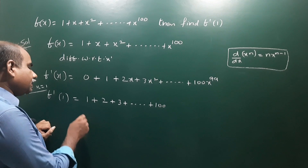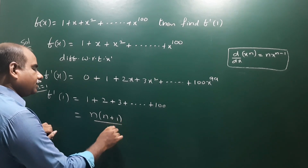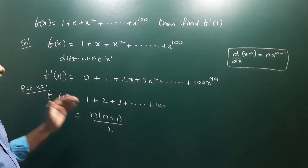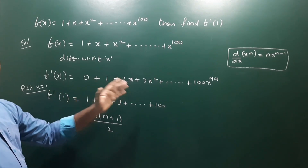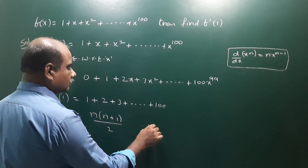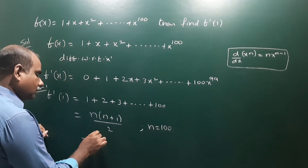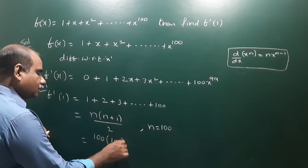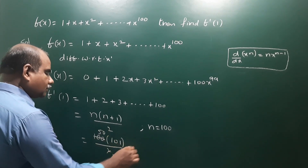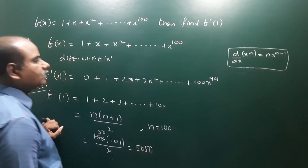The sum of the first n natural numbers formula is n(n+1)/2. These are the first 400 natural numbers, so n = 400. Substituting: 400 × (400 + 1) / 2 = 400 × 401 / 2 = 200 × 401 = 80,200. Wait — actually n = 100 as stated: 100 × (100+1) / 2 = 50 × 101 = 5050. So f'(1) = 5050. That is the answer.